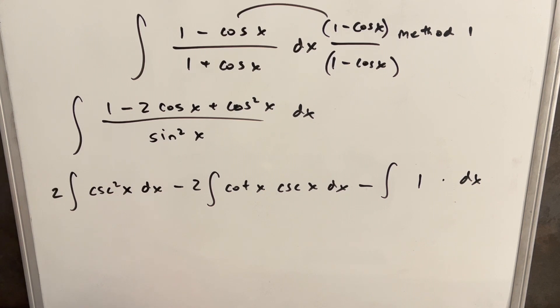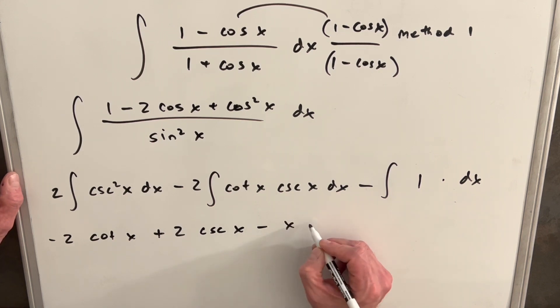These are all well-known integrals. So integrating this, we're going to have 2 out front. The integral of csc² is minus cot x, and we'll have a minus 2 here. The integral of cot x csc x is actually minus csc x, so that's going to change our minus sign to a plus there. And then here, we're going to have minus x plus c.